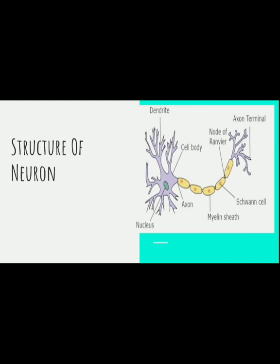Looking into the structure of a neuron: dendrites receive the incoming neural impulses from adjacent neurons or directly from the sense organs. The nerve impulse is passed on to the main body of the neuron, which is called the soma. From there it passes on to the axon, whose function is mainly to help in transmitting information to the terminal buttons. The terminal buttons' main function is to transmit information to another neuron, or to a gland, or to a muscle. Neurons generally conduct information in only one direction: from dendrites through soma and axon to the terminal buttons.